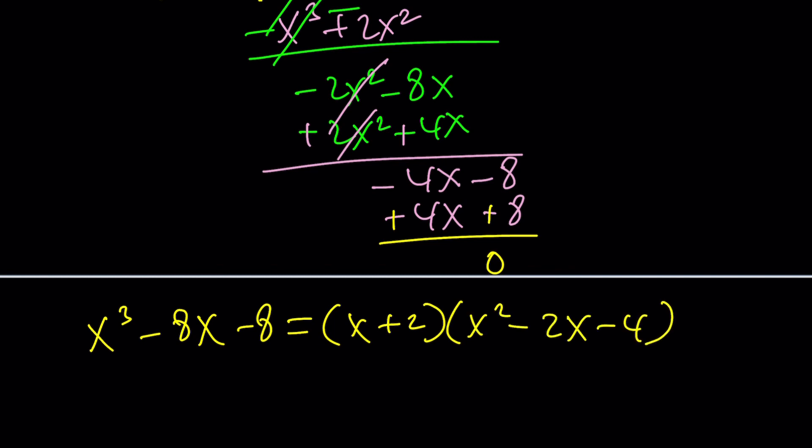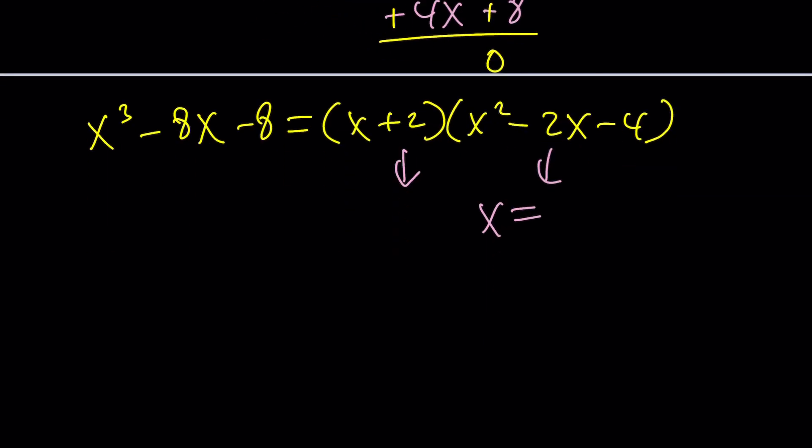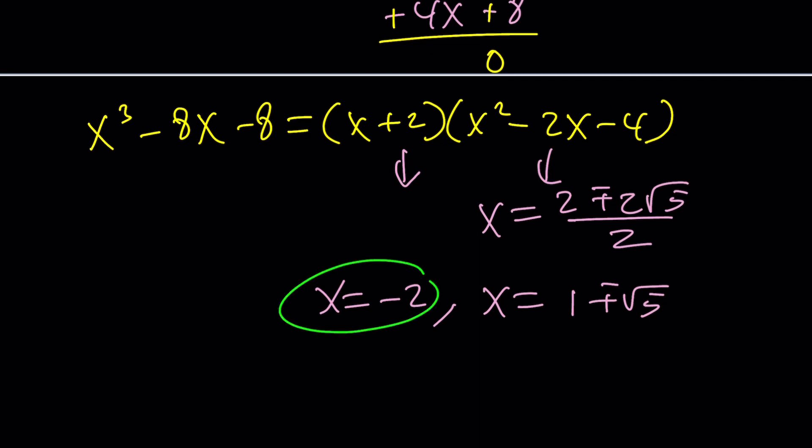In other words x³ - 8x - 8 can be factored as (x + 2)(x² - 2x - 4). By setting each factor equal to zero we're able to find the solutions. From here we get x = -2 and from here by using the quadratic formula we get -b ± √(b² - 4ac). Four plus 16 is 20, that's 2√5. x = 1 ± √5 are going to be the solutions. Of course -2 is another solution. So this cubic equation has three real solutions.